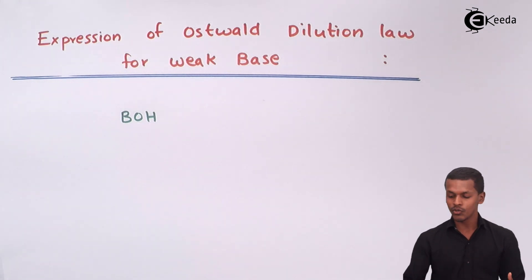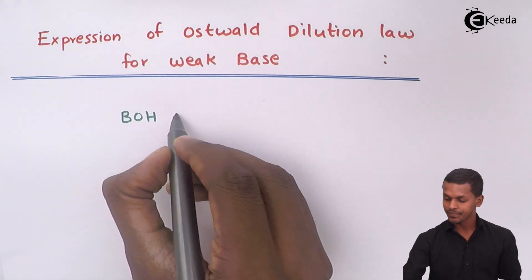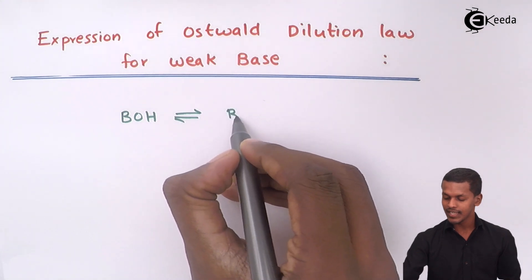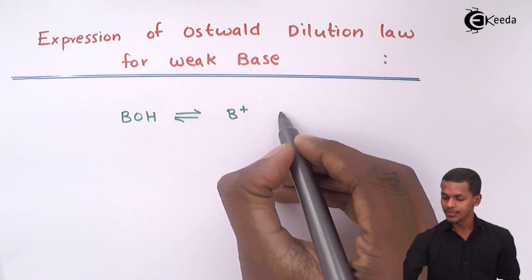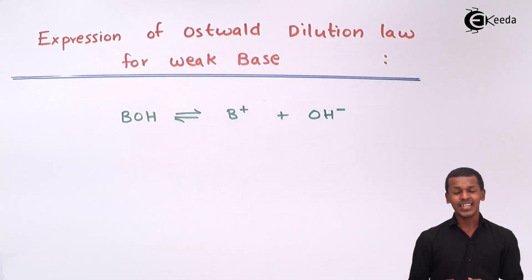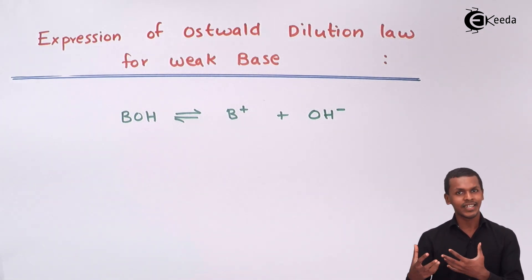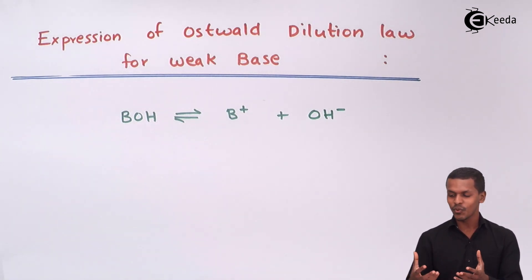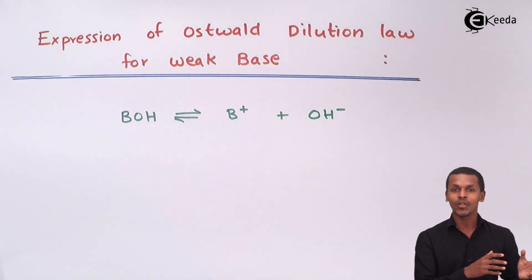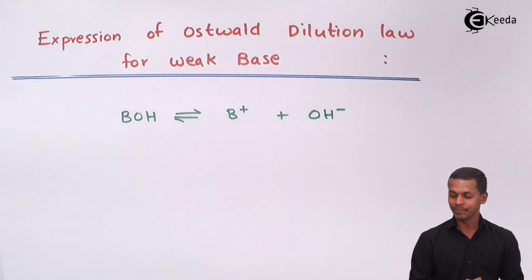B-OH will dissociate into basically two components, that is B⁺ as well as OH⁻. Since it consists of an OH⁻ group that has been dissociated in water to give OH⁻ ions, that is the reason it is called a base — which is what we got to know in the previous concepts of acids and bases.